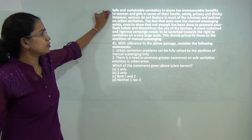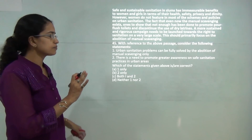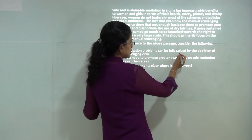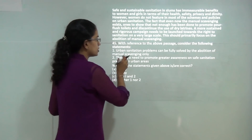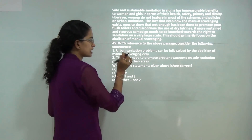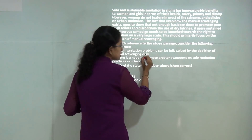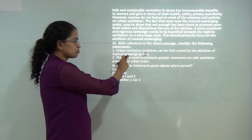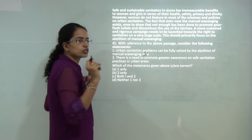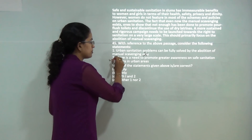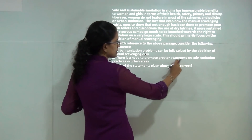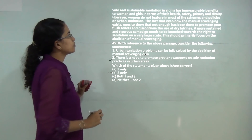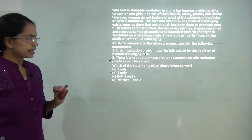This question focuses on manual scavenging. The first statement says urban sanitation problems can be fully solved by abolition of manual scavenging only. Since the word 'only' is used, this statement becomes incorrect — it is one of the reasons, not the only reason. However, there is a need to promote greater awareness for safe sanitation practices in urban areas, which is correct. So statement two is the correct answer.